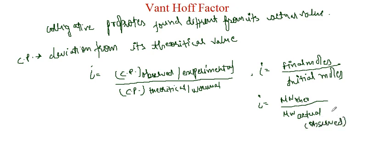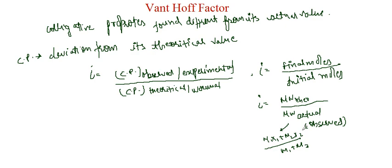The molecular weight actual or observed for a mixture is given by M1x1 plus M2x2 divided by the total moles, which gives the average molecular weight. And we know colligative property is inversely proportional to molecular weight.